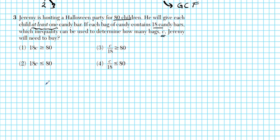If every child gets one bag, we have 80 — the number of children — equals the number of bags. There are C bags. For each bag, there are 18 candy bars. So to get the total number of candy for the entire party, you take the number of bags times the number of candy in each bag. So 1 bag gives 18 candies, 2 bags gives 36. This equality guarantees that each child has a candy bar.